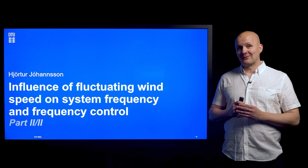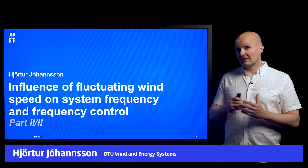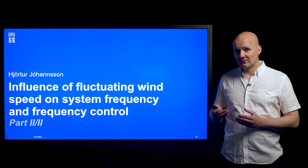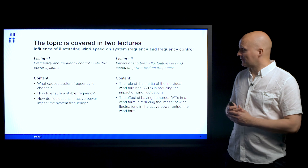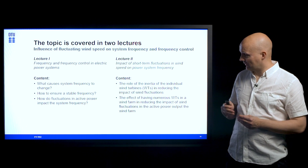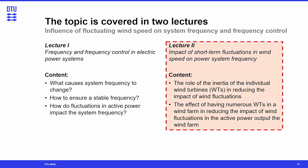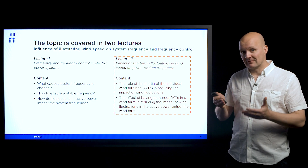This is the second lecture that addresses the topic of how fluctuating wind speeds acting upon wind farms can influence system frequency and system frequency control. Last time we took a look at what causes frequency to change. We talked about frequency control and also examined how fluctuations in active power impact system frequency. Today we turn our focus on the wind farm and the properties within the wind farm that contribute to a further smoothing out of these fluctuations in wind.